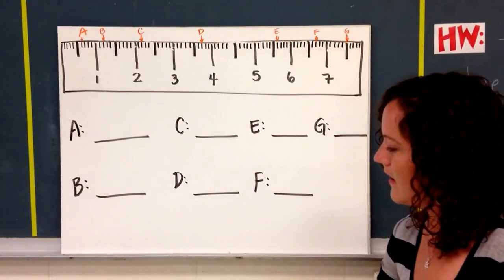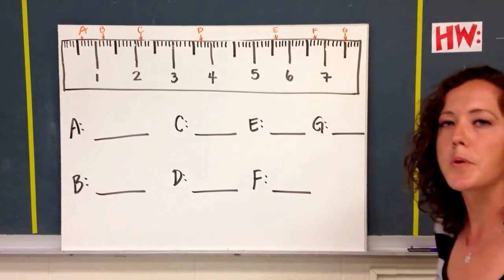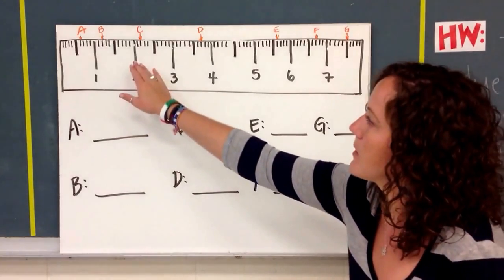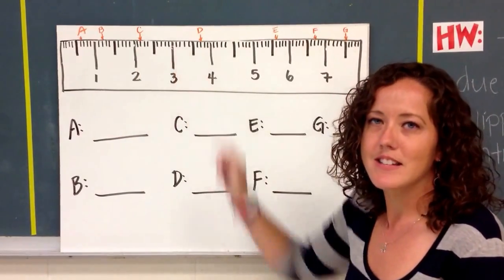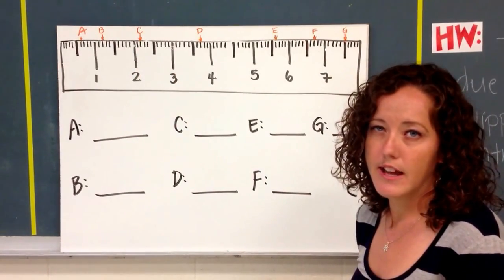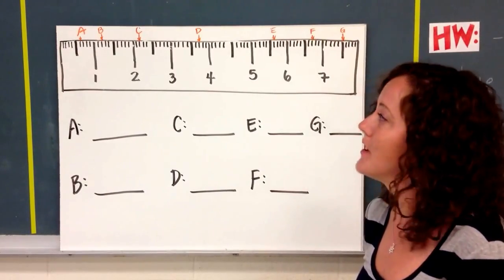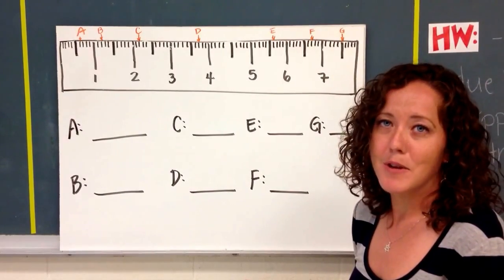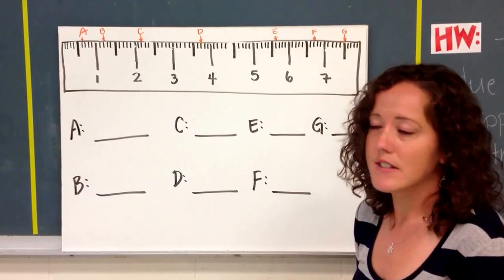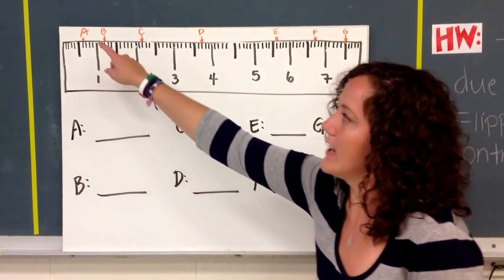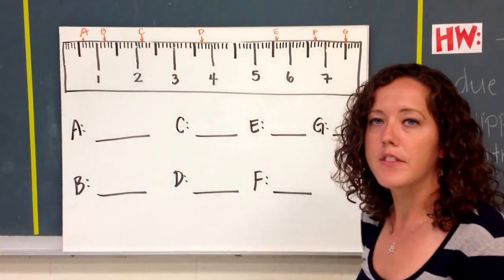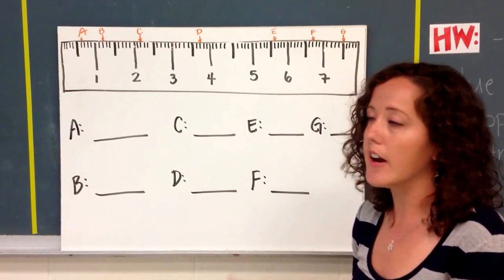So on your notes, you have a ruler, a metric ruler. And you'll notice that in between each number, there are actually 10 spots instead of usual 8 or 16, depending on the type of ruler you might have. And so it's a lot easier to make measurements because they're based on tenths. So we want to look at each of these labels and figure out what the distance is from the end of the ruler to the arrow.